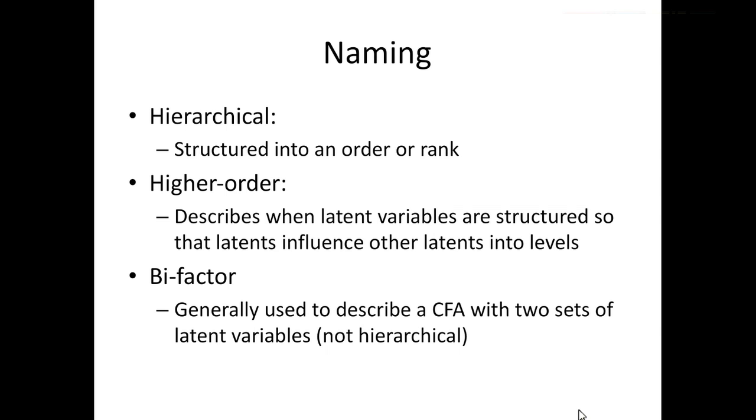So the naming of these things: a hierarchical model has a rank or an order to it and sometimes those are called higher order models. Higher order models are when latent variables influence other latent variables in a very structured way. These are supposed to be separate from fully latent models which we'll cover in the next section. So latents influence other latents, and you're trying to describe the correlations between latents.